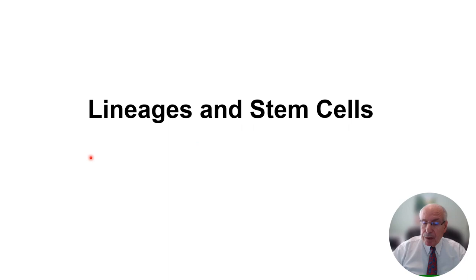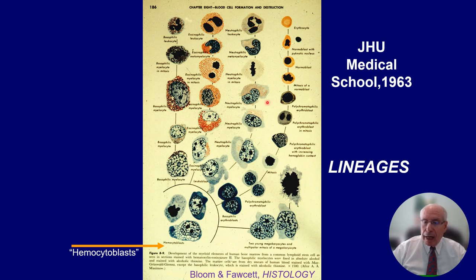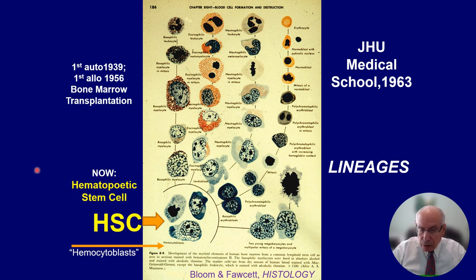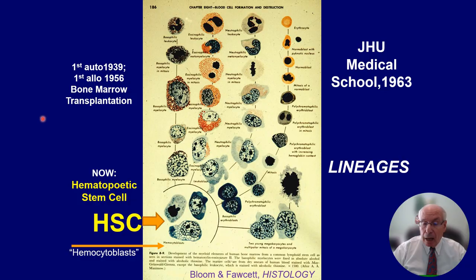This is a histology textbook from when I was in medical school in the 1960s, showing what was called a hematocyte. As deduced by hematologists from blood smears, this cell could eventually, in a sequence of differentiation steps called a lineage, produce erythrocytes, white cells, or any of the cells associated with blood cell circulation. The term hematopoietic stem cell was coined, and the logic supported using these cells in bone marrow transplantations to rejuvenate people wiped out by chemotherapy or radiation.